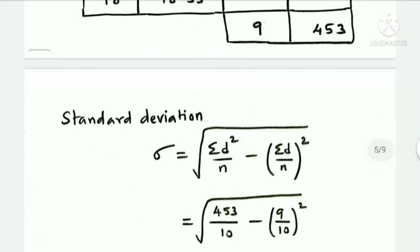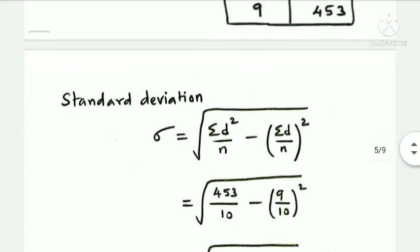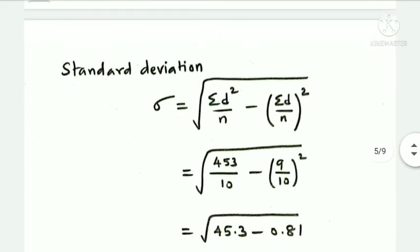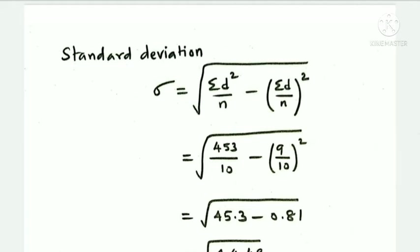The assumed mean method formula is: sigma equals root of (summation d squared by n) minus (summation d divided by n) whole squared. Substituting values: root of 453 by 10, minus 9 by 10 whole squared. 453 divided by 10 gives 45.3.